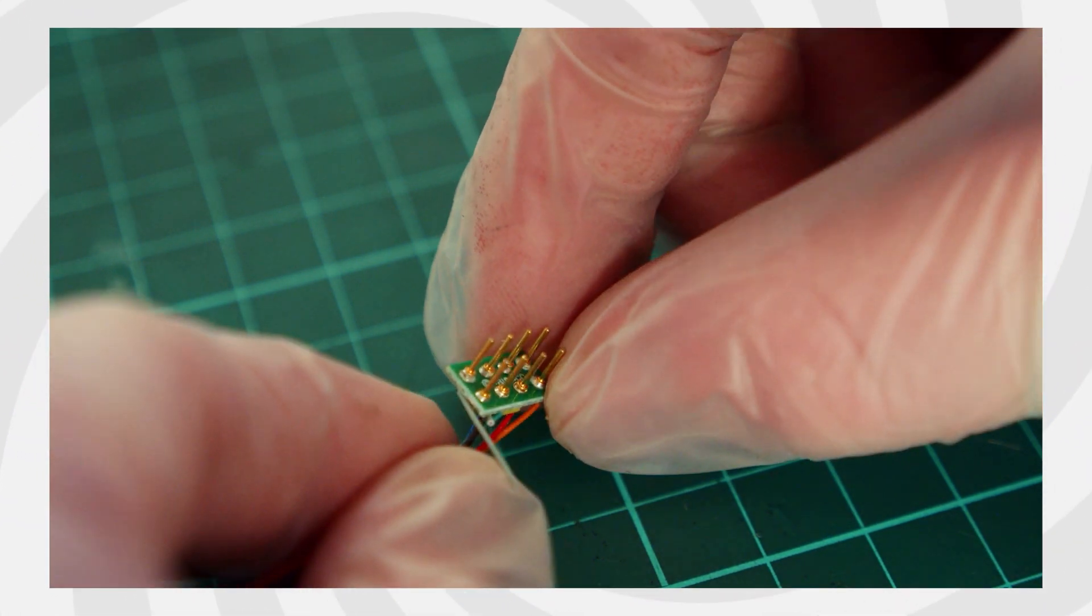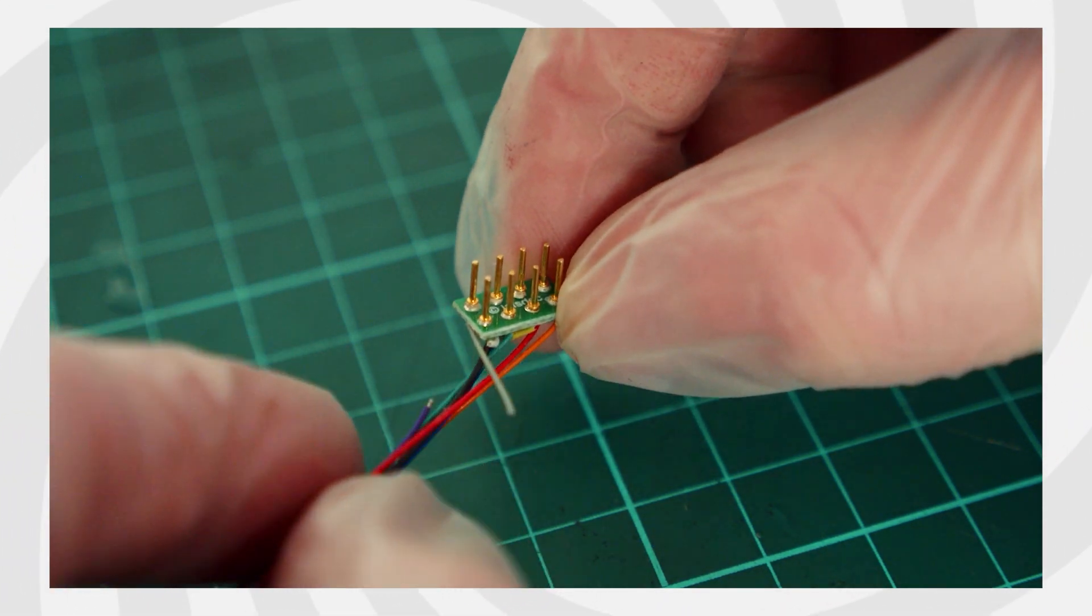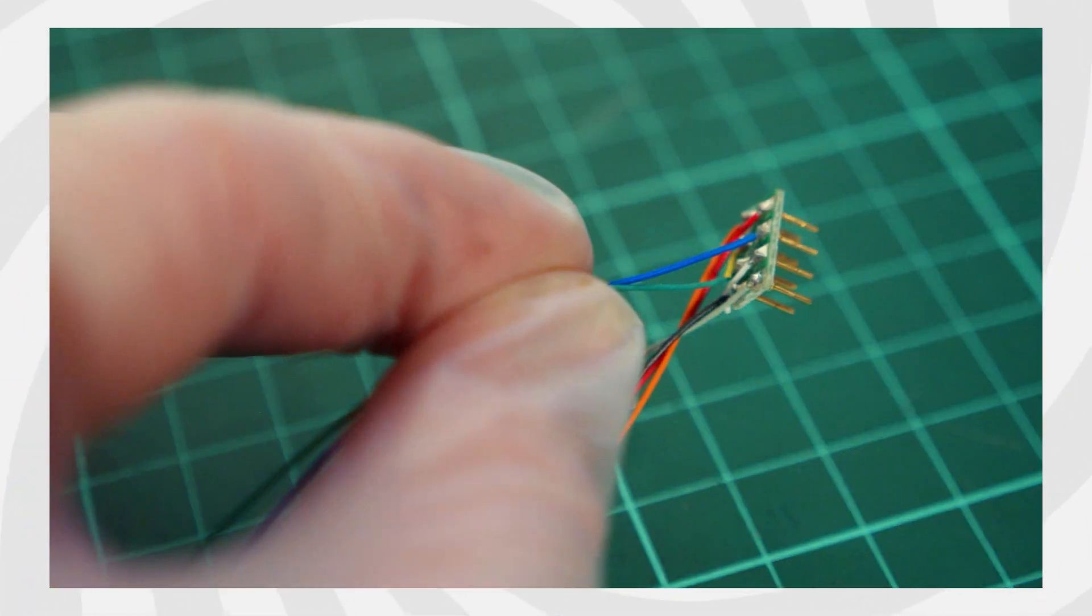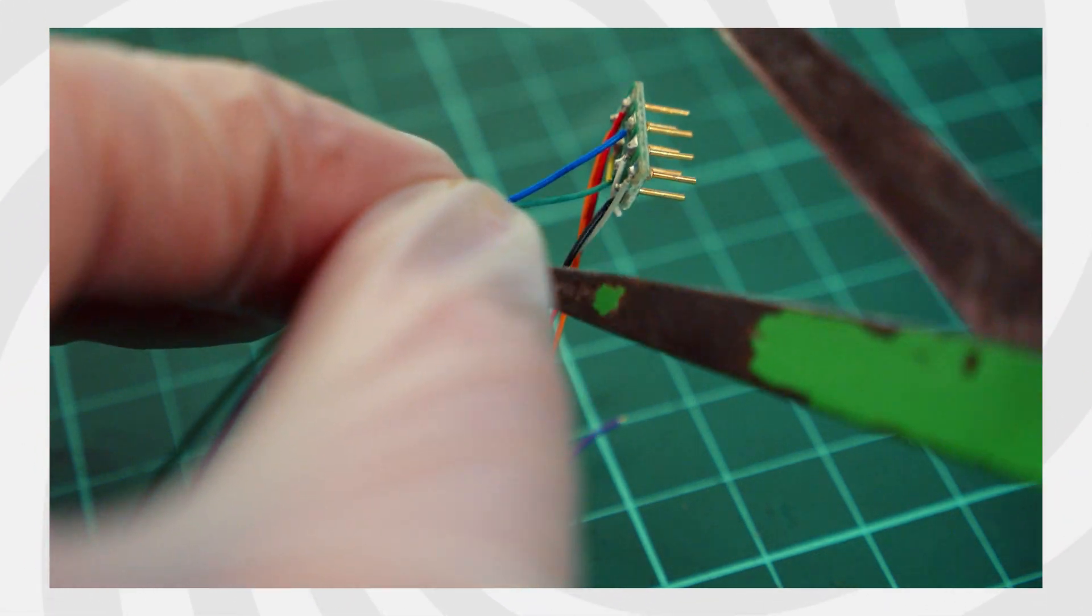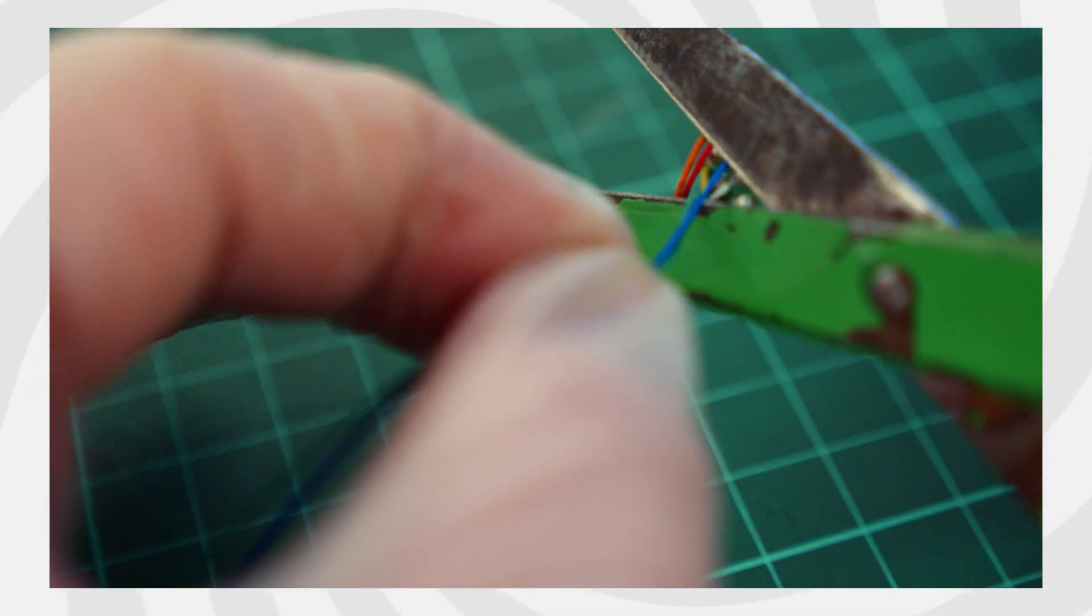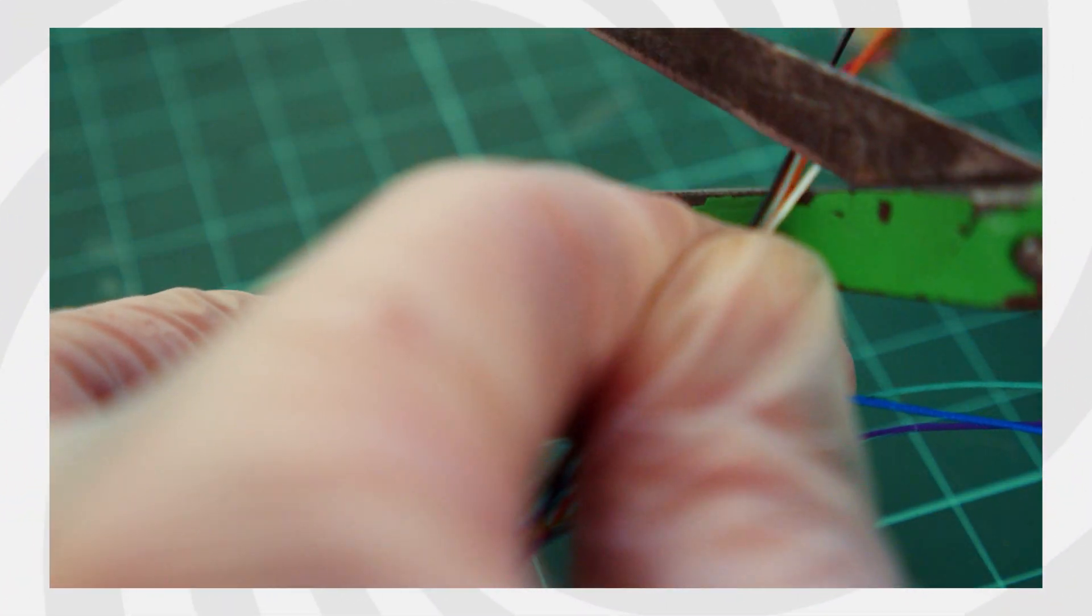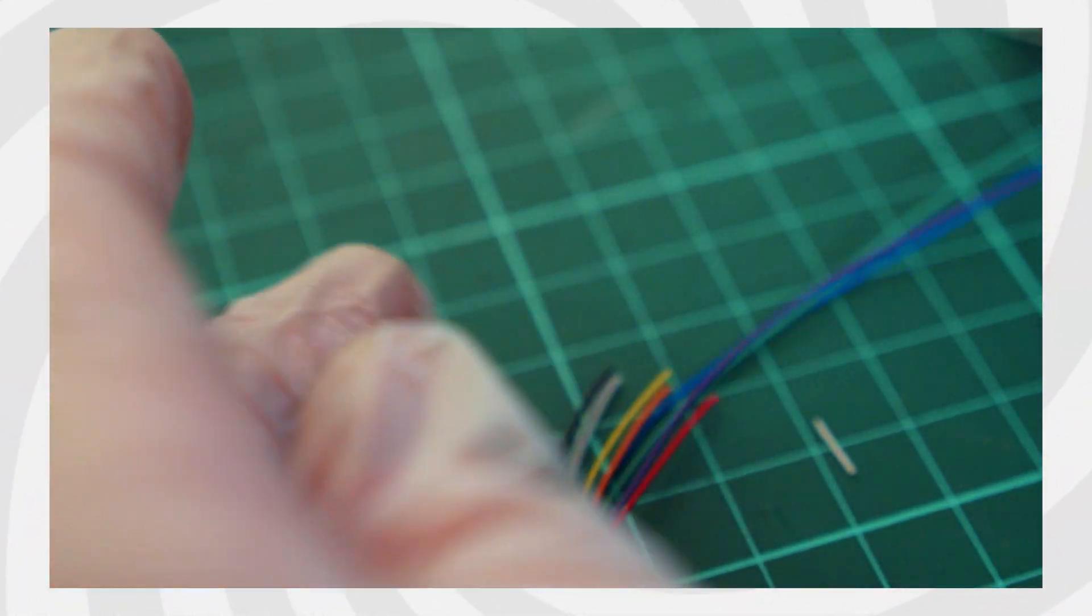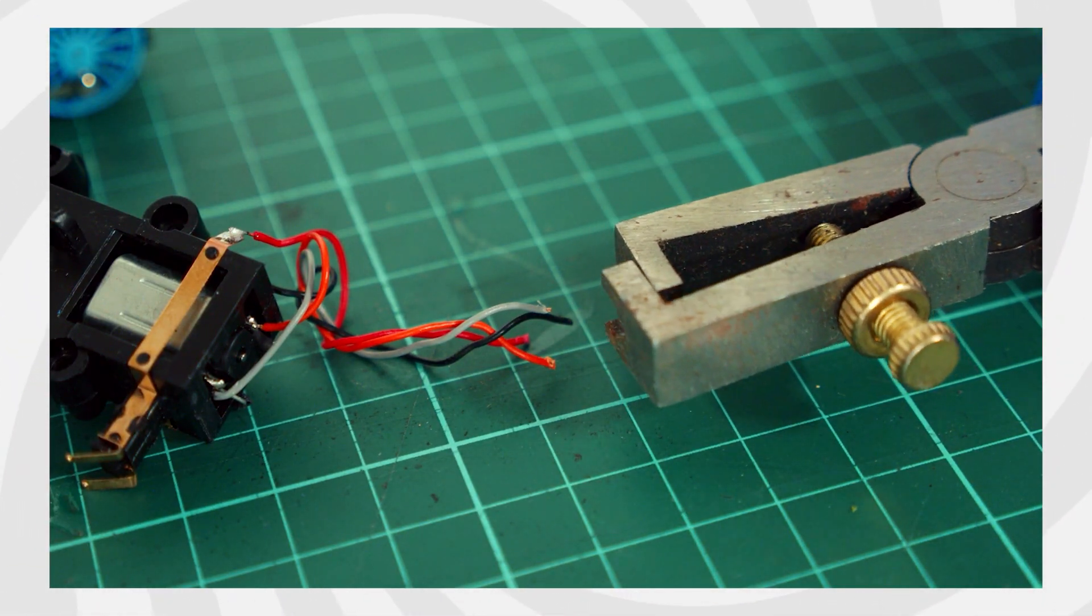This part of the decoder setup is used to plug into DCC ready locomotives. As the Bachmann Thomas we are using here is not DCC ready, we will need to cut this off. Because the smoke unit will be in front of the engine, keeping these wires longer will be helpful for us, so we will cut the blue and green wires quite close to this point. The rest of the wires don't need to be so long, and it will be better for wire management if we cut them a little shorter. Just like we did for the wires coming from the Bachmann Thomas, carefully remove a little bit of the insulation around the wires.